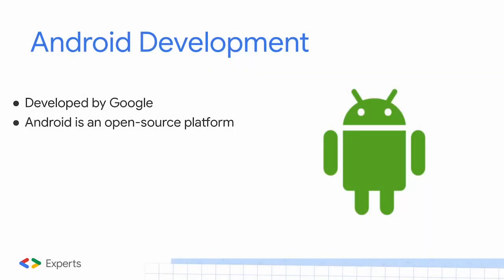Android is developed by Google and is an open source platform — that's what makes Android win in my opinion, because it's used in so many devices. Android engineers encounter many problems especially when building across devices, because Android is used by Samsung, Motorola, Pixel, and more. We don't build for one specific device the way iOS developers do — iOS only has one phone, so life for them is easier.